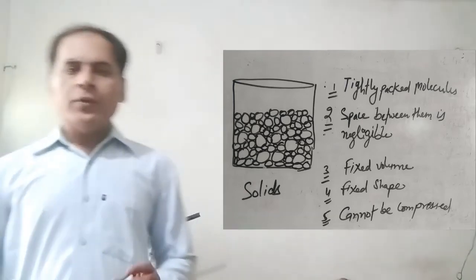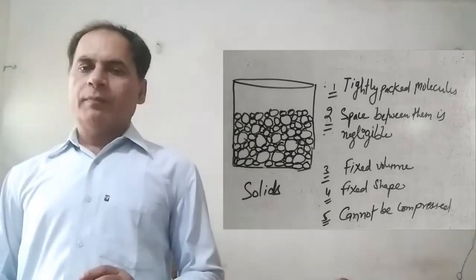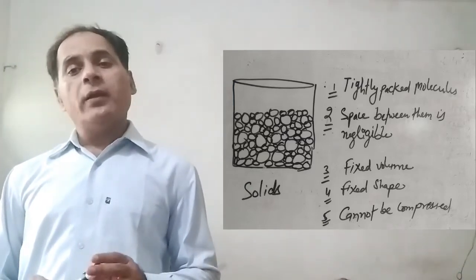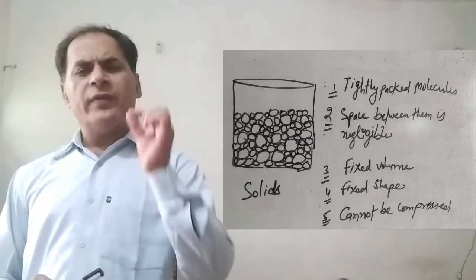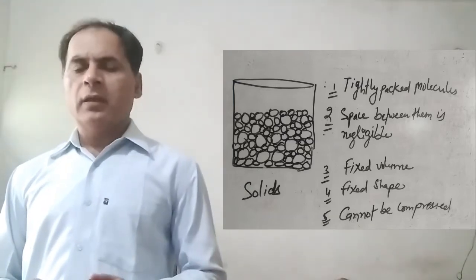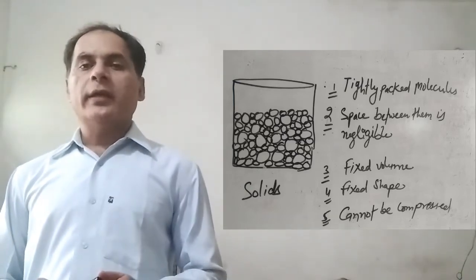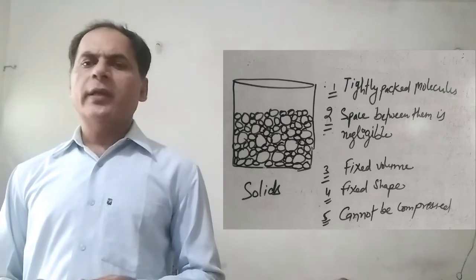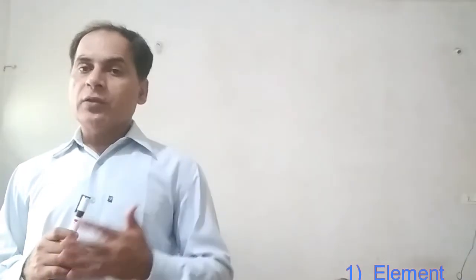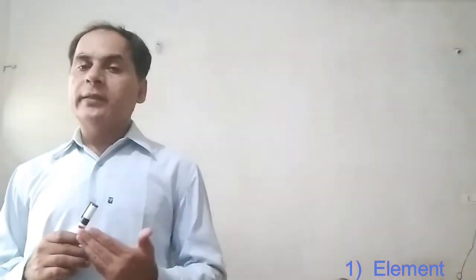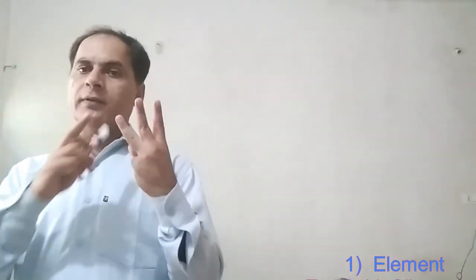Now, the composition of matter. All matter consists of very tiny particles called atoms, whether gas, liquid, or solid — they are all made up of small particles. If the particles are of a similar kind or different kind in any matter, on that basis matter is divided into three categories: elements, compounds, and mixtures.